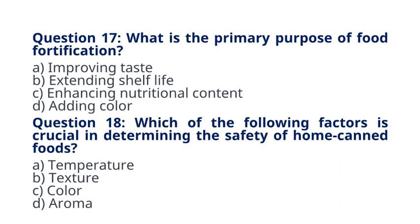Question 18. Which of the following factors is crucial in determining the safety of home canned foods? A. Temperature B. Texture C. Color D. Aroma. The correct answer to question 18 is option A. Temperature. Explanation: ensuring proper processing temperatures during home canning is critical for the safety of the canned foods.